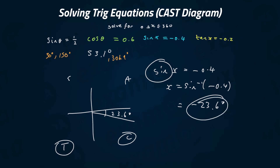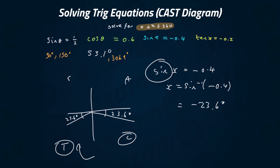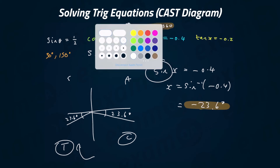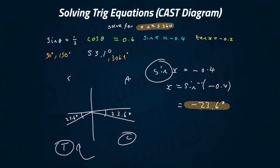We're working with sine but ended up in the cos region — the negative quadrant. I draw 23.6 degrees again in the other negative quadrant, always from the x-axis, never from the y-axis. Measuring anti-clockwise from the positive x-axis, that angle is 180 plus 23.6, which gives 203.6 degrees as our first value.